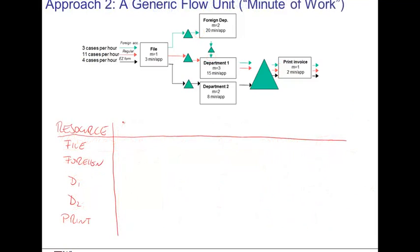The first approach was based on simply adding up the flows at the various resources, computing a total flow and using that as the demand rate. The second approach is slightly different — think about work flowing through the system. At each resource, we have a certain amount of work that can be provided. At the filing department, we can provide sixty minutes per hour of time. At the foreign department, with two persons working, they provide a hundred twenty minutes of work. At department one, with three people, there are a hundred eighty minutes available. A hundred twenty minutes for department two, and sixty minutes at the printing department.